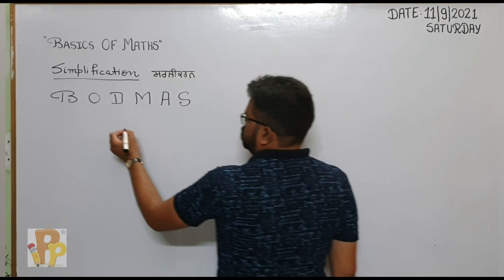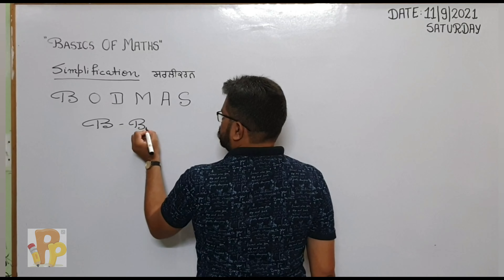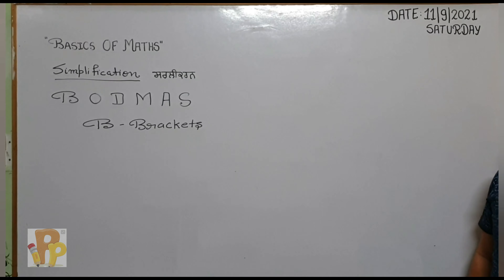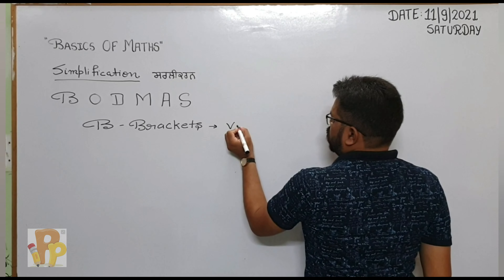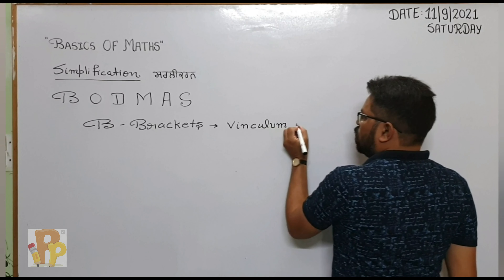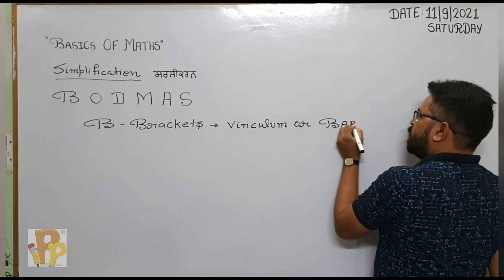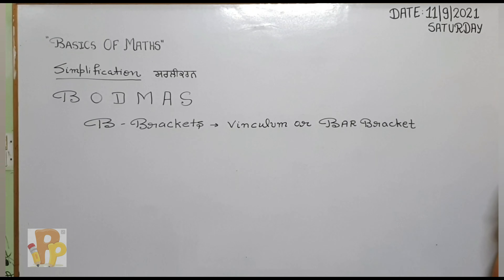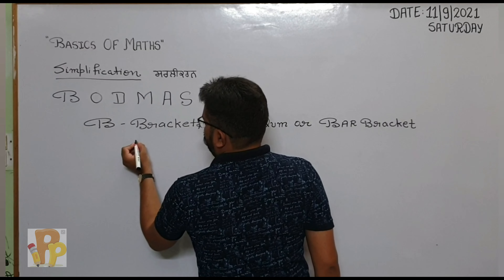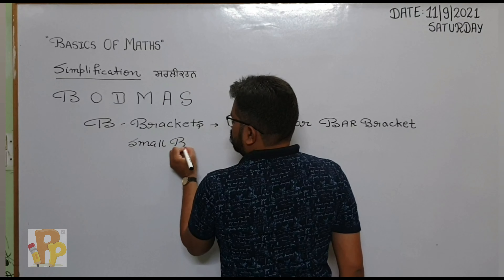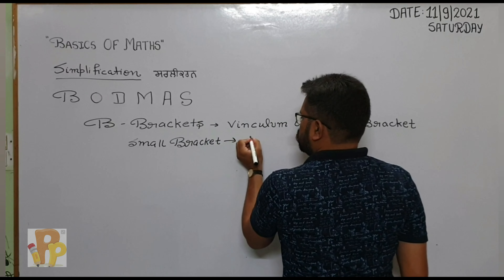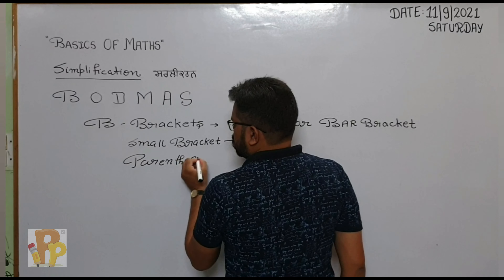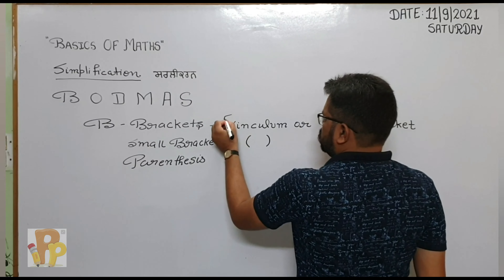अब B से आपका क्या है? Brackets. B से Brackets. Brackets भी आपकी चार तरह की होती हैं. First one is vinculum or bar bracket. First bracket जो आप solve करोगे, that is vinculum — it is also called bar bracket. Second bracket is small bracket. Small bracket आप किससे show करते हो? Parenthesis.